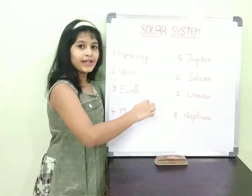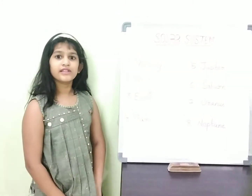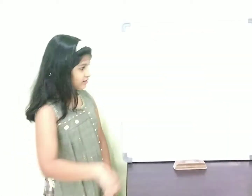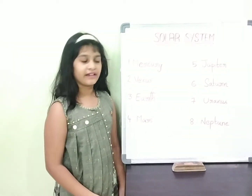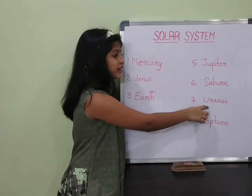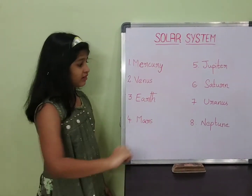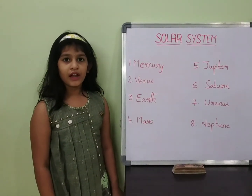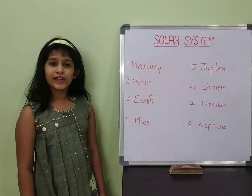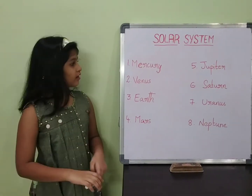Sixth one, Saturn. Saturn is the second largest planet. Seventh one, Uranus. Uranus is the third largest planet. Eighth one, Neptune. Neptune is the coldest planet because it is far away from the sun.